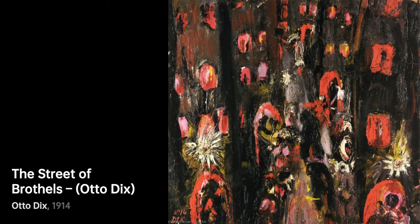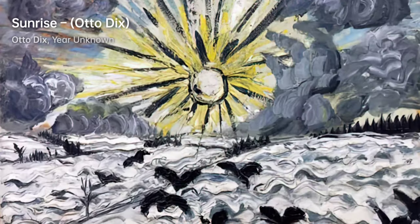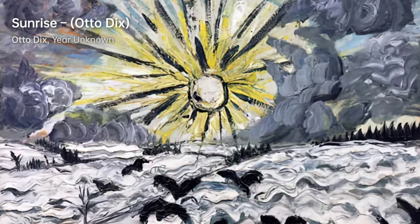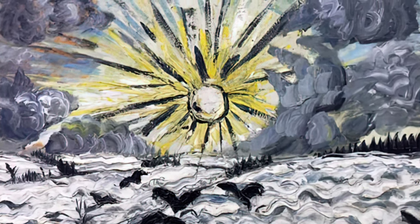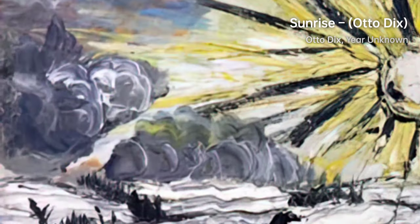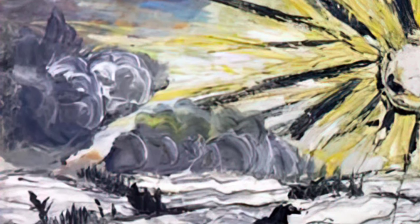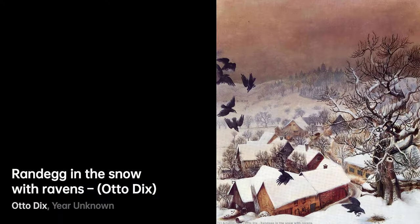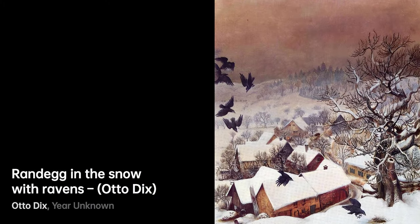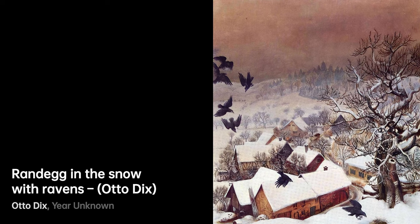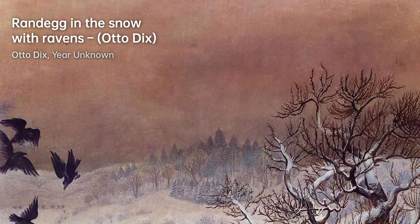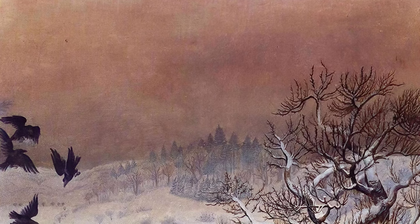Otto Dix, one of the most influential German painters of the 20th century, was born in Untermhaus, Germany, which is now part of the city of Gera, Thuringia. He was raised in a working-class family, the son of Franz Dix, an iron foundry worker, and Louise, a seamstress and former poet. From a young age, Dix was exposed to art, spending hours in his cousin Fritz Eamon's studio, who was a painter. This experience ignited his passion for art, and he also received encouragement from his primary school teacher.